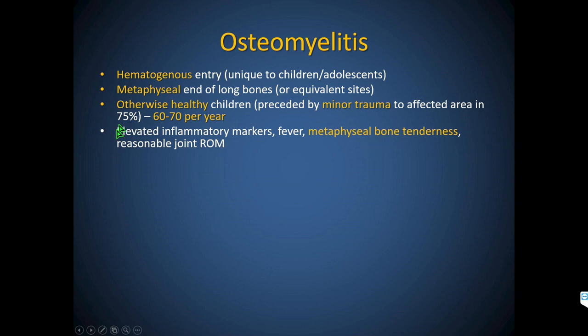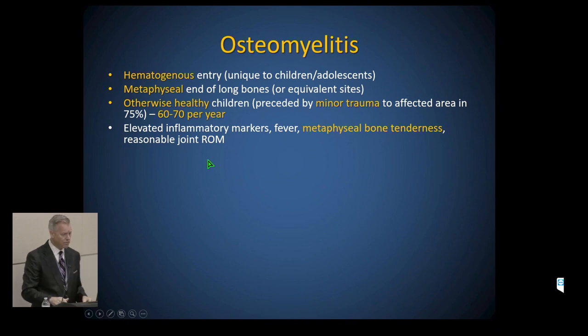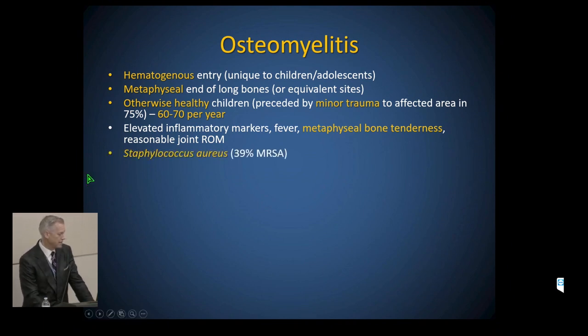We're currently seeing about 60 to 70 cases a year. By physical examination: elevated inflammatory markers, fever, and metaphyseal bone tenderness — they don't like it at all. If you push further along the diaphysis they don't like that either because of pressure within the bone. If I see erythema and somebody's calling it cellulitis but I push on the other side of the bone and sense it may be osteomyelitis, the child will tolerate reasonable joint range of motion. It's a staph aureus disease — 91% of culture-positive cases — and 39% of our cases are MRSA.